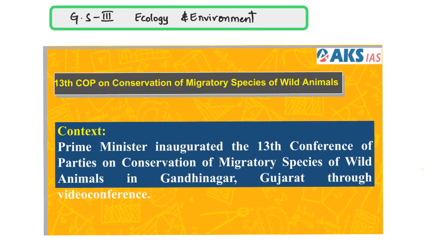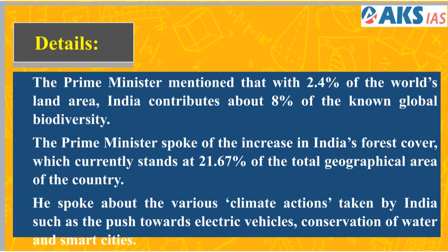The next important news is related to ecology and environment. The article talks about the inauguration done by Prime Minister Narendra Modi for the Conference of Parties on Conservation of Migratory Species of Wild Animals in Gandhinagar. While inaugurating this conference, the Prime Minister mentioned that India consists of 2.4% of the world's land area and contributes about 8% of the known global diversity.